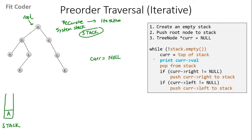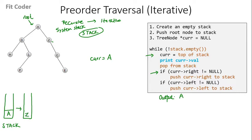Then we run a while loop until the stack is not empty. Currently the stack is not empty, so we go inside the while loop. The first step is we set current to the top of the stack, so current becomes A. We print the value of current — so we print A — and then we pop from the stack, and the stack becomes empty. Then we check if current's right is not null: right of A is Z, so we push Z to the stack. Then we check if current's left is not null: left of A is D, so we push D to the stack.